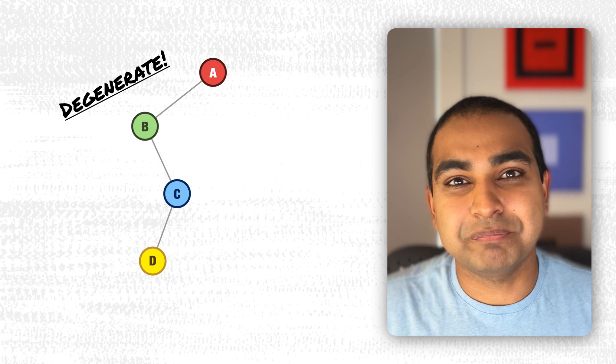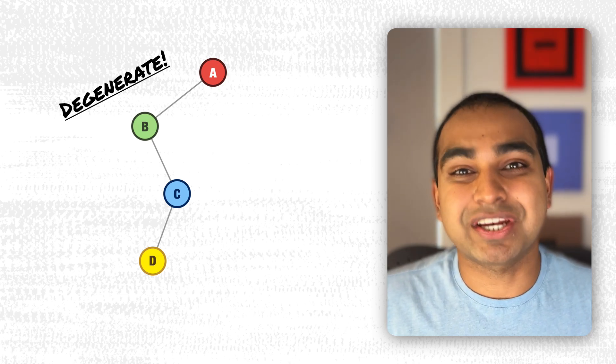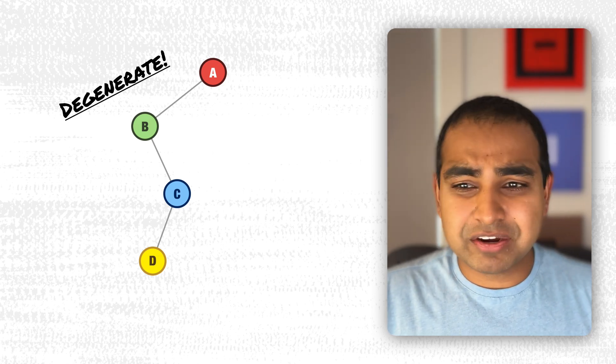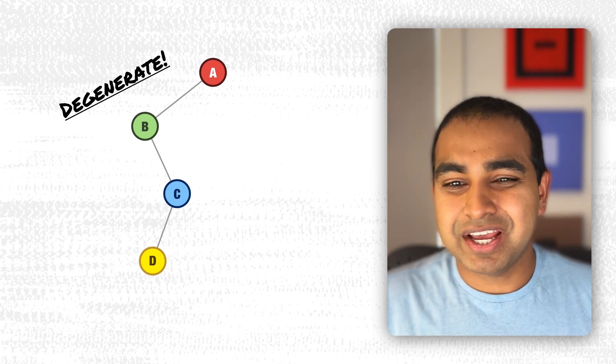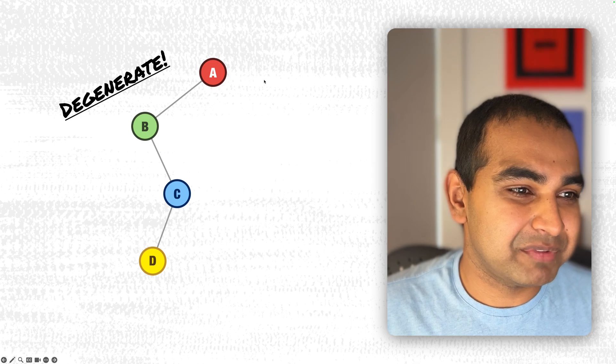The last binary tree variant we'll look at is the degenerate binary tree. A degenerate binary tree, each parent node has only one child node.